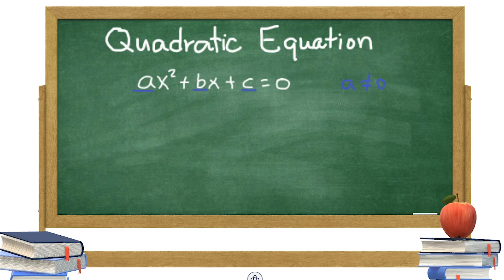In this equation, ax squared is the quadratic term, bx is the linear term, and c is the constant term.